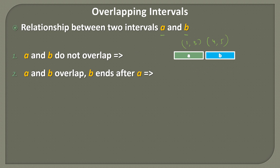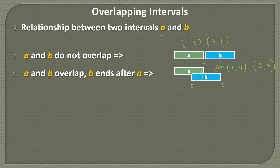The second case is A and B overlap, but B ends after A. A starts and ends at some point, and B starts within A but ends after A. For example, 1,4 and 3,6: interval A starts at 1 and ends at 4, and B starts at 3 — so B begins inside A but ends at 6, after A ends. This is our overlapping interval case where B ends after A.